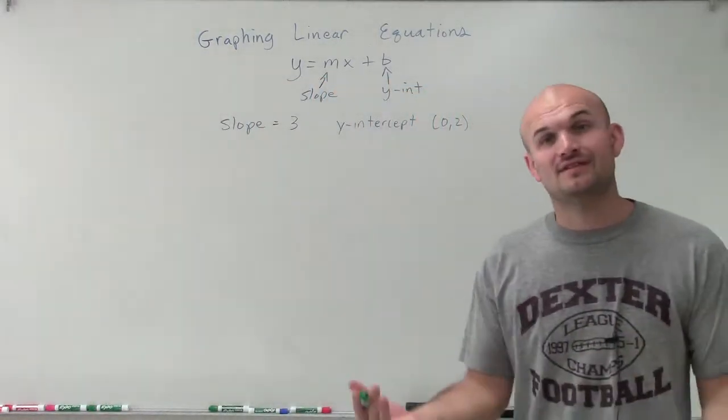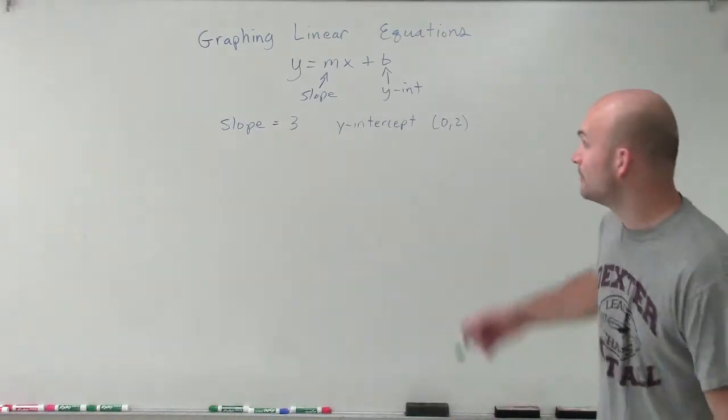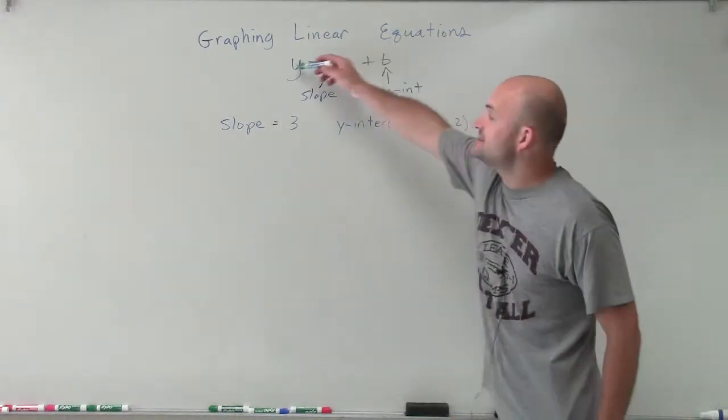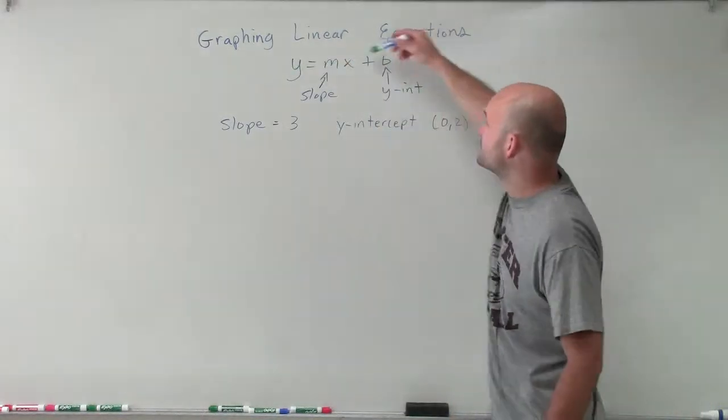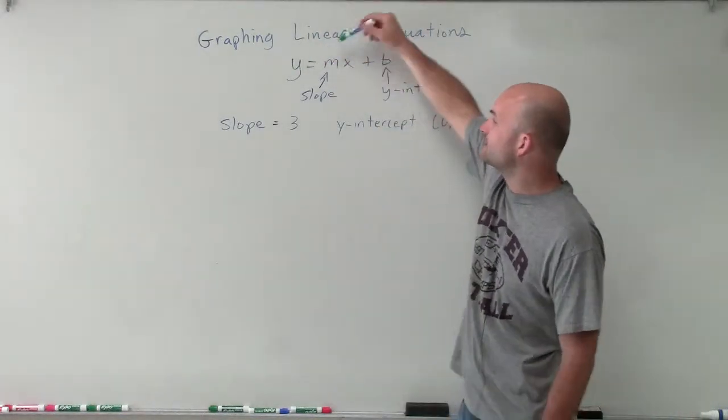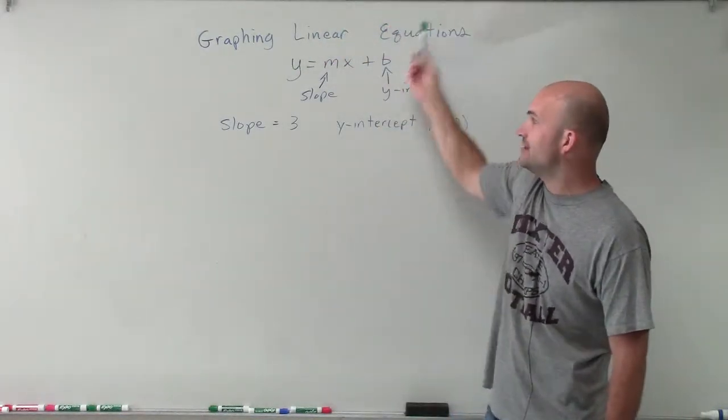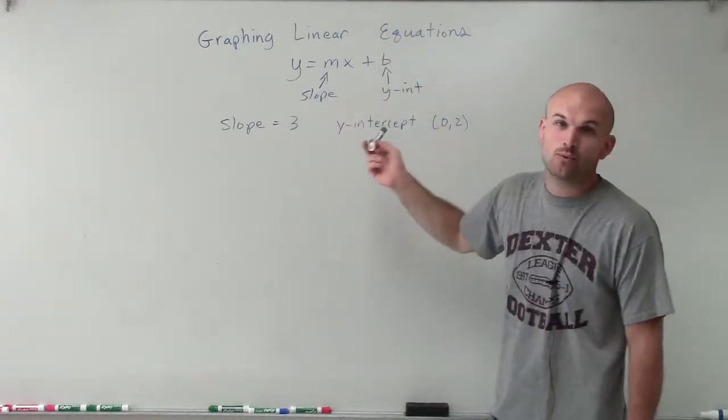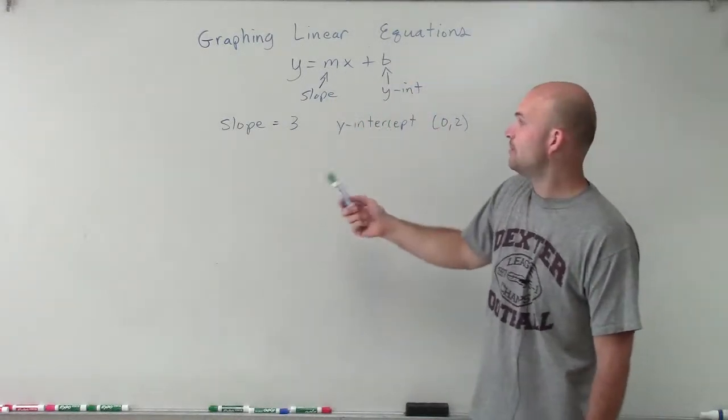We're not given the equation in slope-intercept form, but we see slope-intercept form is written right here: y equals mx plus b. And we know that m is our slope and b is our y-intercept.